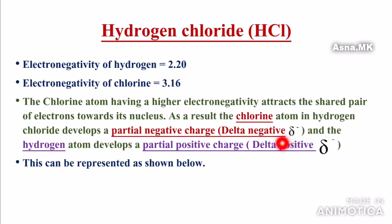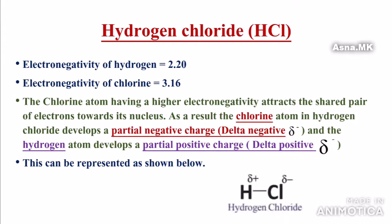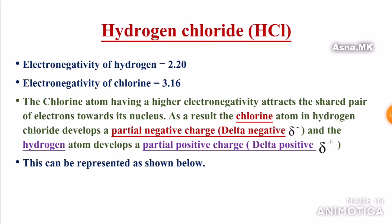Because chlorine attracts the shared electrons towards itself, the hydrogen atom develops a partial positive charge. That is why we get delta-positive on the hydrogen side.